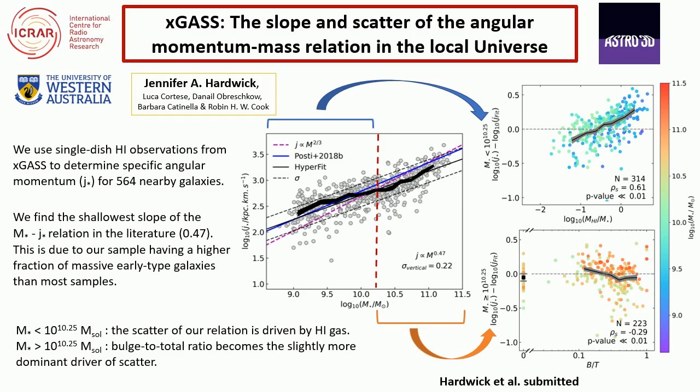For high stellar masses — galaxies greater than 10^10.25 solar masses — the dominant driver is actually bulge-to-total ratio, which is slightly more dominant than the H1 gas fraction for those higher stellar masses.